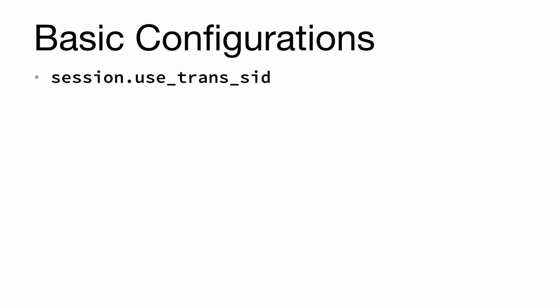Next we have session.use_trans_sid, which controls the use of a transparent session ID. If enabled, it appends the session ID to all relative links, which is a major security risk. The default is equal to zero. I'll tell you in the next lesson what the good options are to change it.